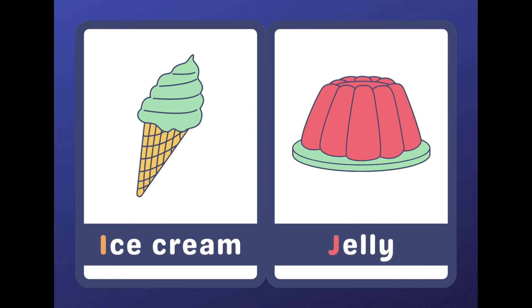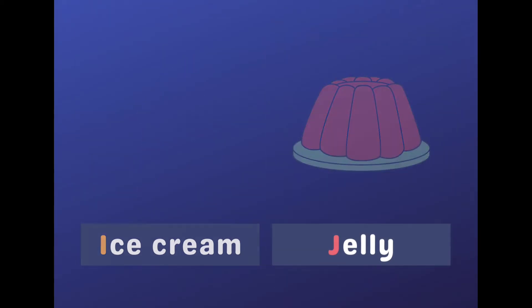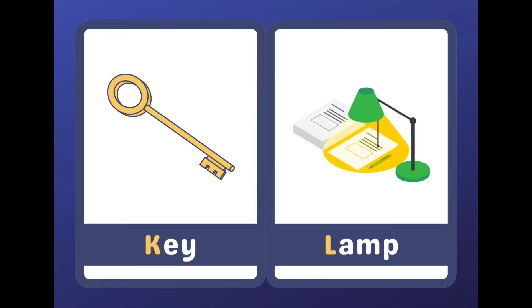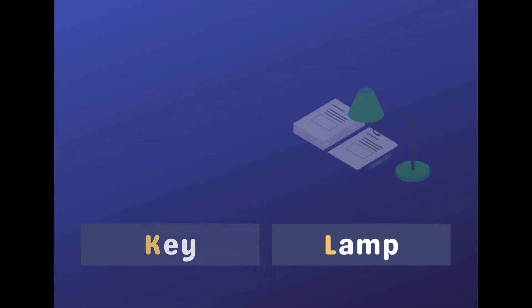I for an ice cream, J for jelly, K for key and L for lamp.